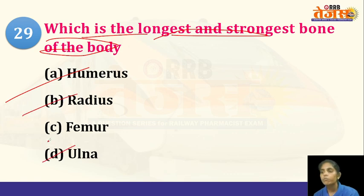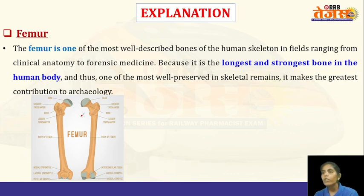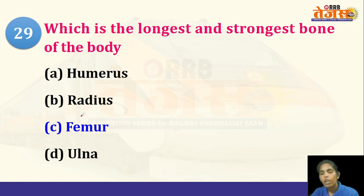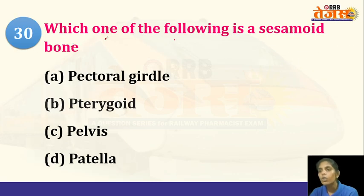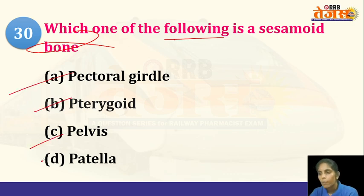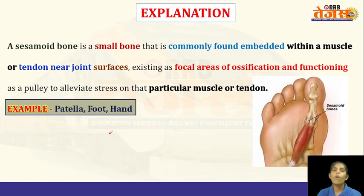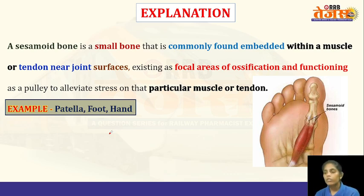Next: which is the longest and strongest bone of the body — humerus, radius, femur, or ulna? The answer is femur, the longest and strongest bone present in the legs. Along with the femur, tibia and fibula are also in the legs. Humerus, radius, and ulna are bones in the arms. Next: which of the following is a sesamoid bone — pectoral girdle, pterygoid, pelvis, or patella? The answer is patella (the knee bone), which is called a sesamoid bone because of its appearance like a sesame seed.